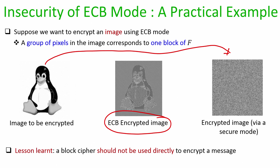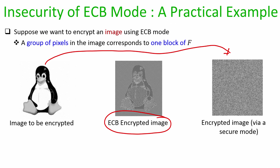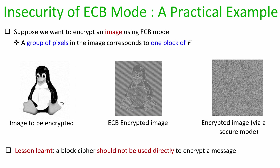The lesson learned is that a block cipher, namely the function f, should not be used directly to encrypt a message. ECB mode makes exactly that mistake — directly encrypting messages using f with the same key in all invocations. In contrast, our candidate CPA secure scheme never fed the message directly to f; it fed a random input to f, generated a pad, and XORed it with the message to produce the ciphertext.